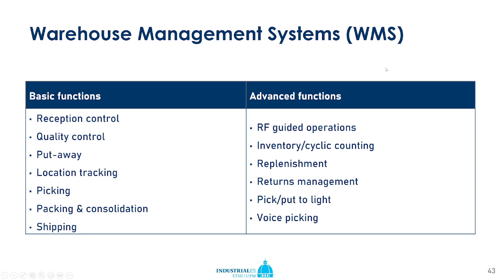Among the advanced functions, there is functionality related to radio frequency so that operations can be guided or assisted by that technology. Cyclic counting is another area where such systems can help. These two features can be combined — you can find warehouses where all items are tagged with RFID and workers with tablets walk the corridors, automatically counting inventory without physically touching items, with the tablet gathering information directly from the RFID tags.